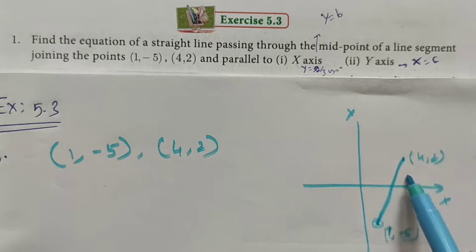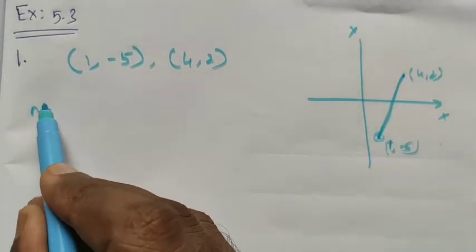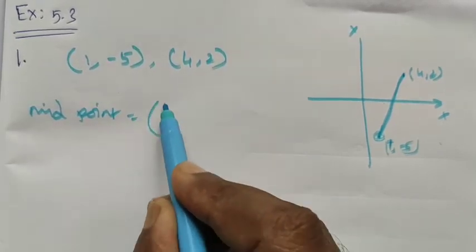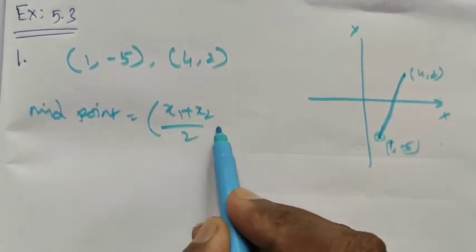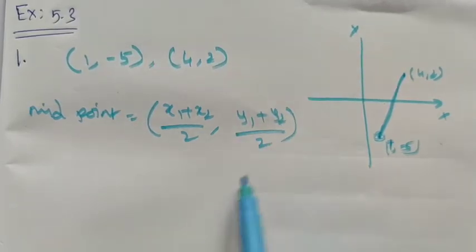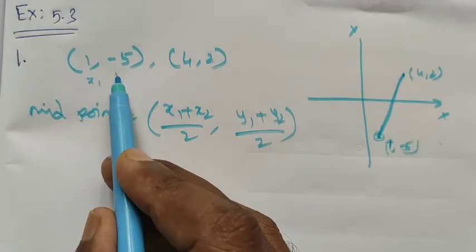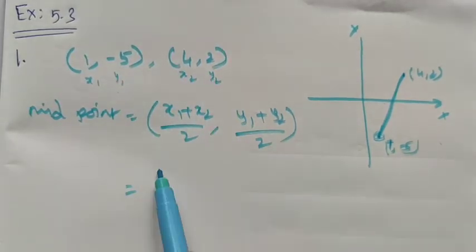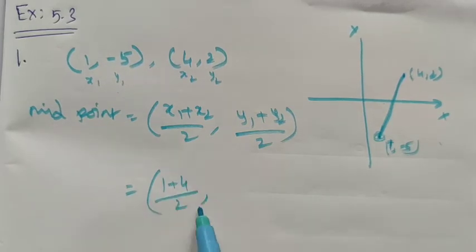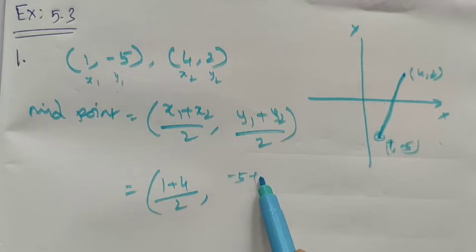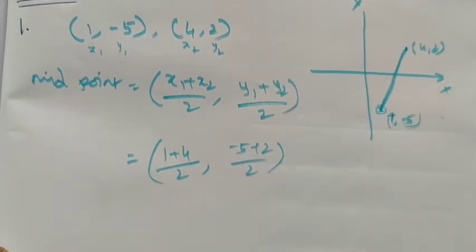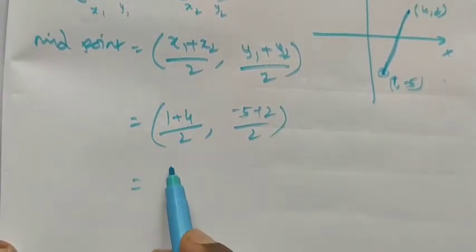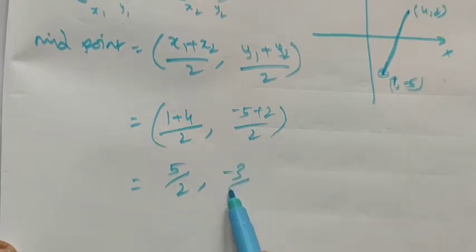We want to find the midpoint of this line. We know the formula: midpoint = ((x1 + x2)/2, (y1 + y2)/2). Taking the first point as (x1, y1) and the second as (x2, y2), we apply the values: (1 + 4)/2 and (-5 + 2)/2, giving the midpoint as (5/2, -3/2).